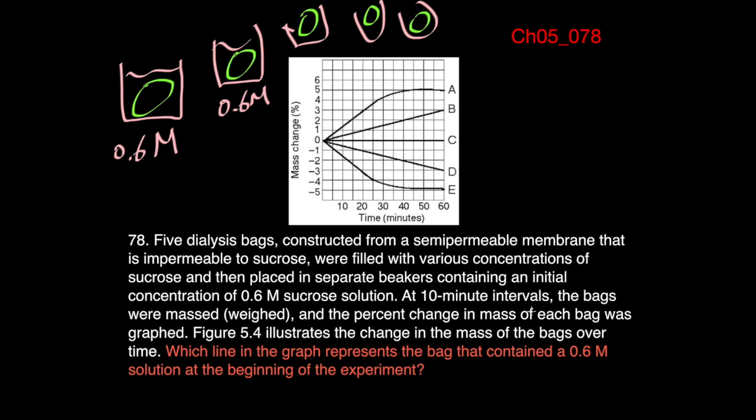And then at 10 minute intervals, the bags were massed or weighed, and the percent change in mass of each bag was graphed, as you can see in the graph here. This figure illustrates the change in mass of the bags over time. Now, the problem is, which line in the graph represents the bag that contained 0.6 molar solution at the beginning of the experiment, meaning it's isotonic with the solution.